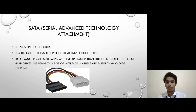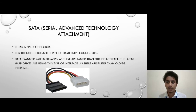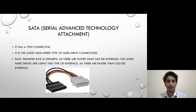The second and most important interface is SATA, Serial Advanced Technology Attachment. It has a 7-pin connector, as you can see in the picture. It is the latest high-speed type of hard drive connector with a data transfer rate of 300 Mbps. The latest hard drives use this type of interface as they are faster than the old IDE interface.